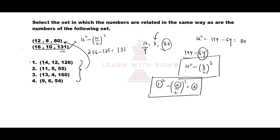Now let us check the options. For the first option: 14 squared minus (12/2) cubed. Using unit digit concept — 14 squared has unit digit 6, and 6 cubed also has unit digit 6. So 6 minus 6 gives a number with unit digit 0, but the given number has unit digit 6. Not our option. For the next option: 11 squared minus (5/2) cubed — since 5/2 is not a whole number, this is not our option.